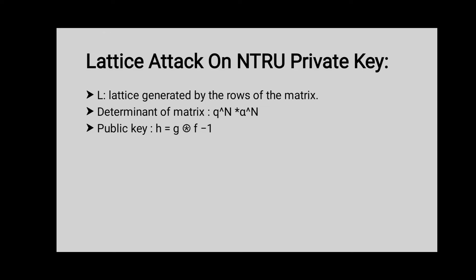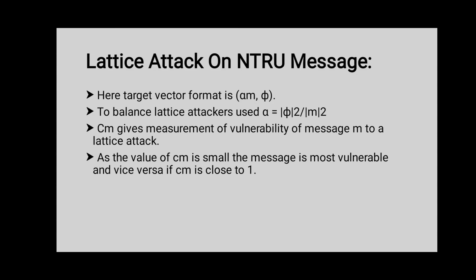In this case, the data is generated by the rows of matrix L. The determinant of this matrix is Q^N times alpha^N. The public key is X equal to G times F_inverse. Lattice attacks also apply to NTRU messages.